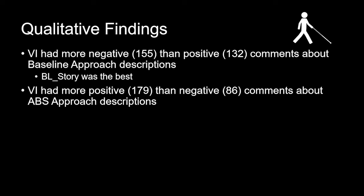We also did a qualitative analysis where two authors reviewed all statements written by participants with visual impairments, developed codes, and discussed all disagreements until fully agreeing. At a high level, people with visual impairments had more negative than positive comments about the baseline approach descriptions — often noting missing details. However, the baseline story task, where participants composed a story about the artwork, performed best because people could be more expressive in storytelling than in the other tasks involving emotions, tags, or words and phrases.